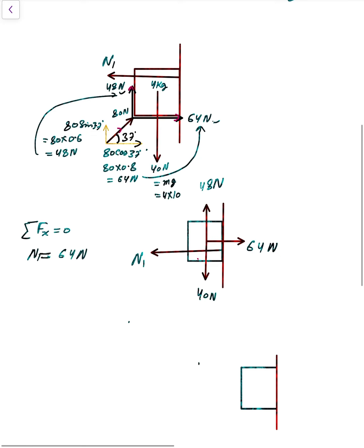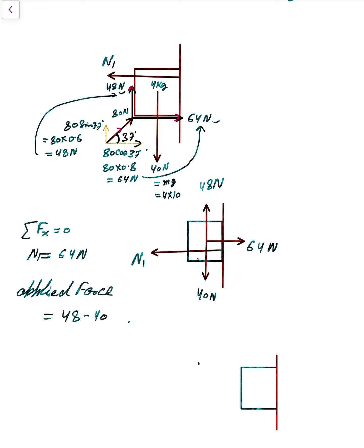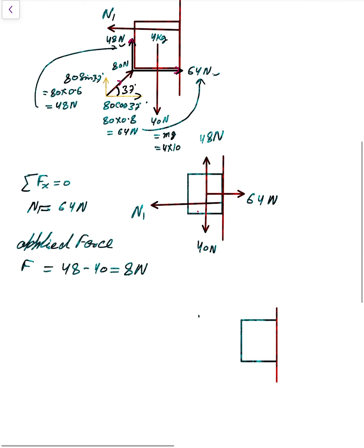Now the net applied force in the vertical direction is 48 minus 40 = 8 Newton upward. This 8 Newton is the net applied force acting on the block in the vertical direction.